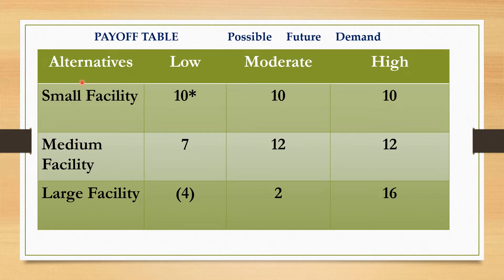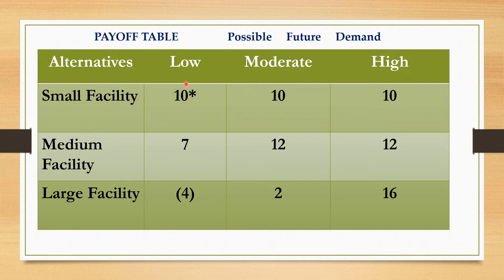To construct our regret table, we go back to the original payoff table and look at the highest value under each possible future demand. Under the column 'Low,' we have 10, 7, and negative 4 — the highest is 10, so mark it down. Under 'Moderate,' we have 10, 12, and 2 — the highest is 12. For the 'High' demand column, we have 10 million, 12 million, and 16 million — the highest is 16 million.